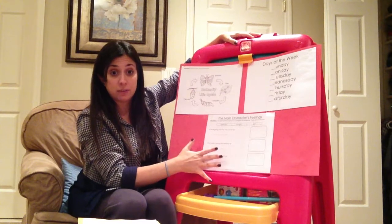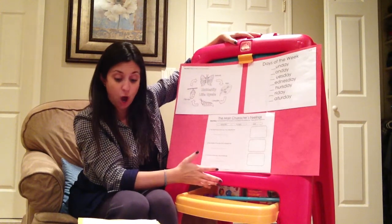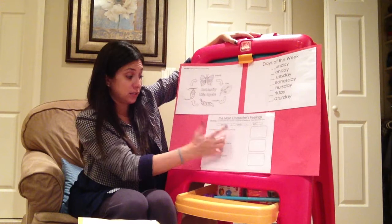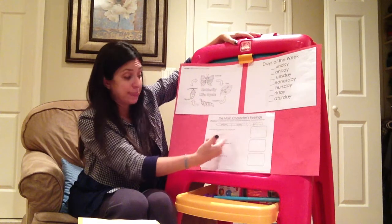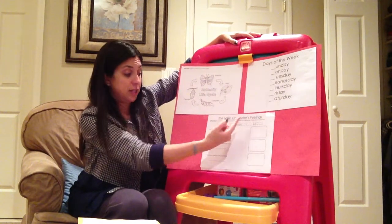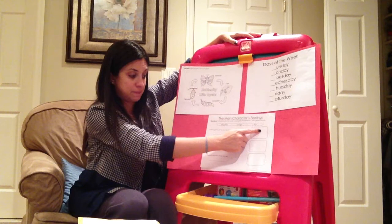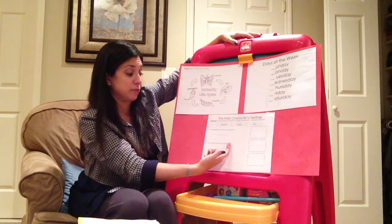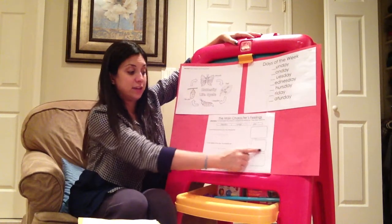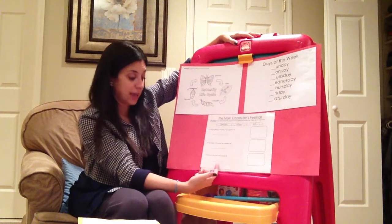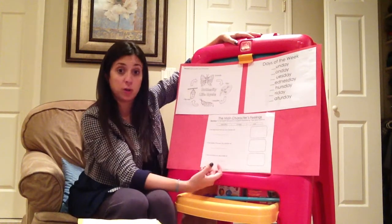There would also be a writing piece focused on the main character's feelings. The lower group would be given a closed sentence — for example, 'At the beginning of the story, the caterpillar felt' — with choices: beautiful, hungry, or sick. They would cut and paste their answer on the line and then draw a picture in the box. The same format applied to the middle and end of the story, with the butterfly felt at the end, and they would draw a corresponding picture.